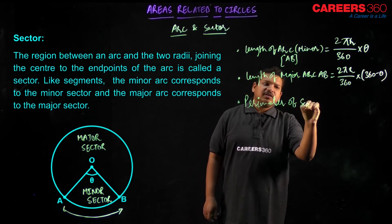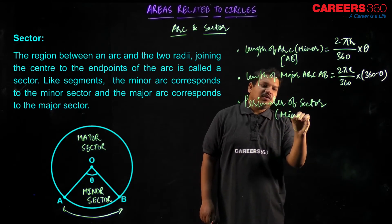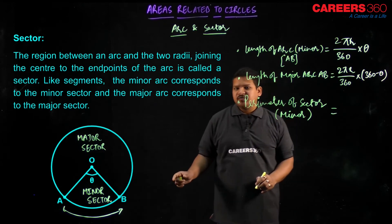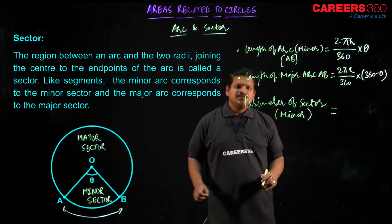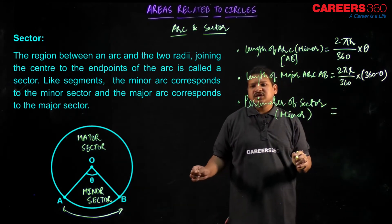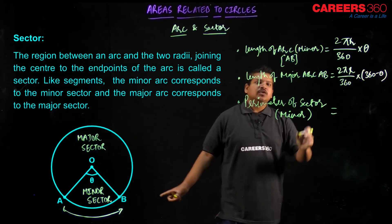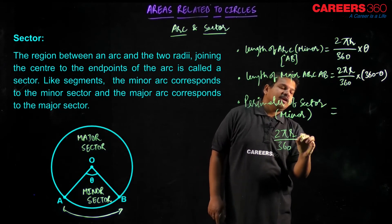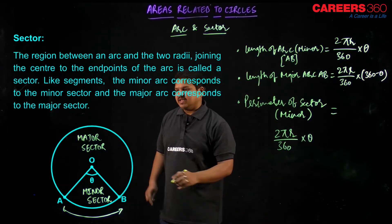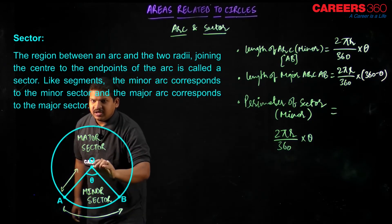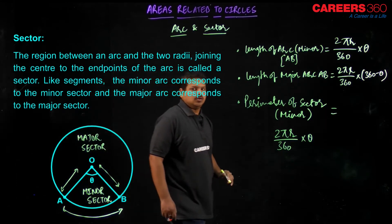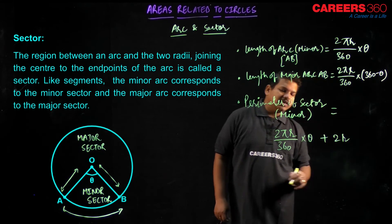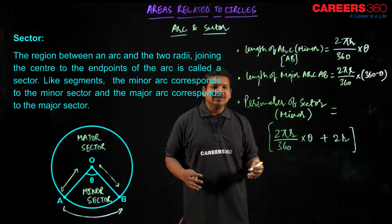Now let us calculate the perimeter of the minor sector. The minor sector is composed of arc AB and the two radii OA and OB. The perimeter of the minor sector is: the length of arc AB, which is (2πr / 360) × θ, plus the lengths of OA and OB, which together are 2r. So the perimeter of minor sector = (2πr / 360) × θ + 2r.